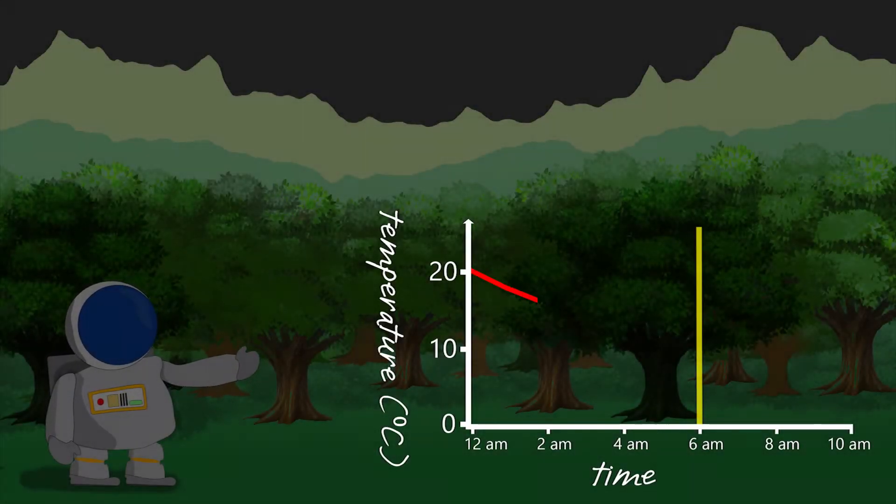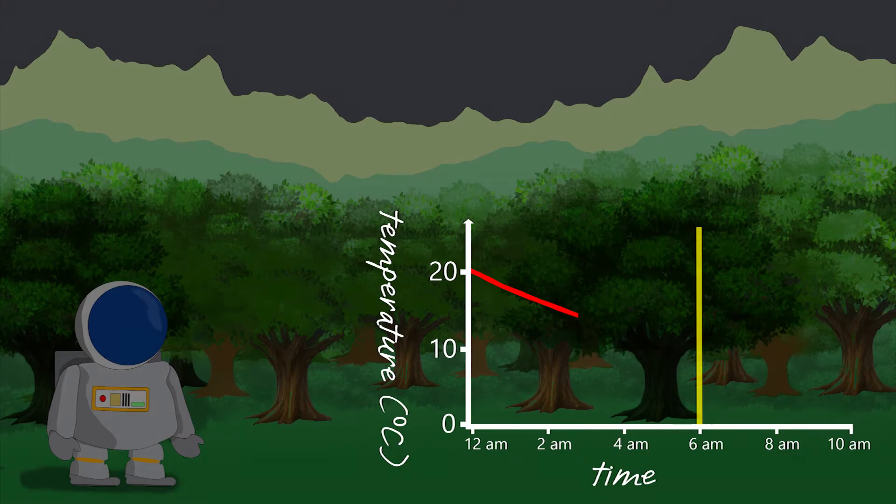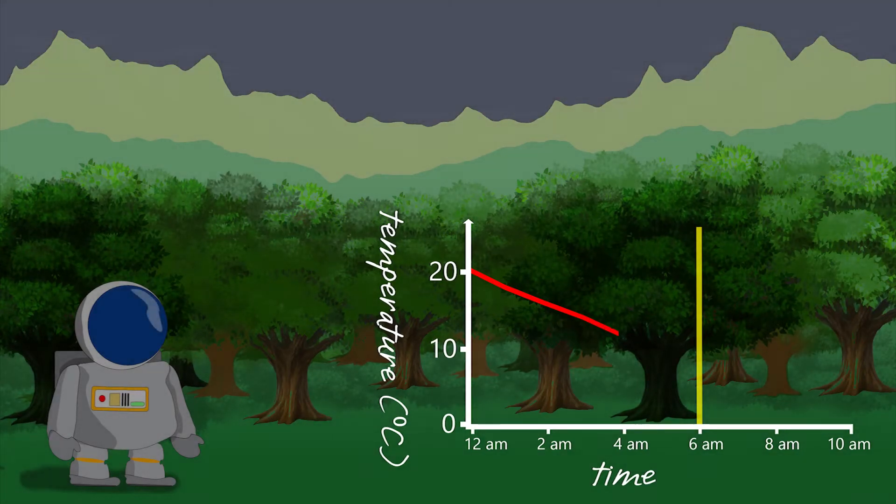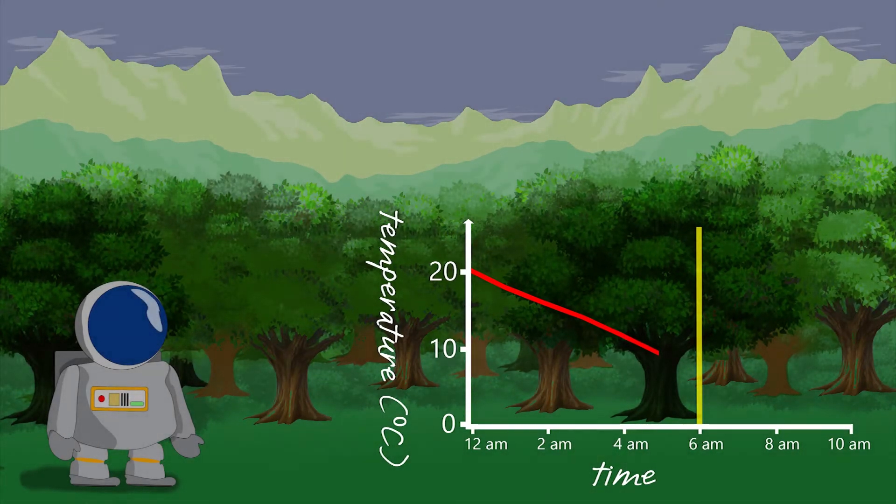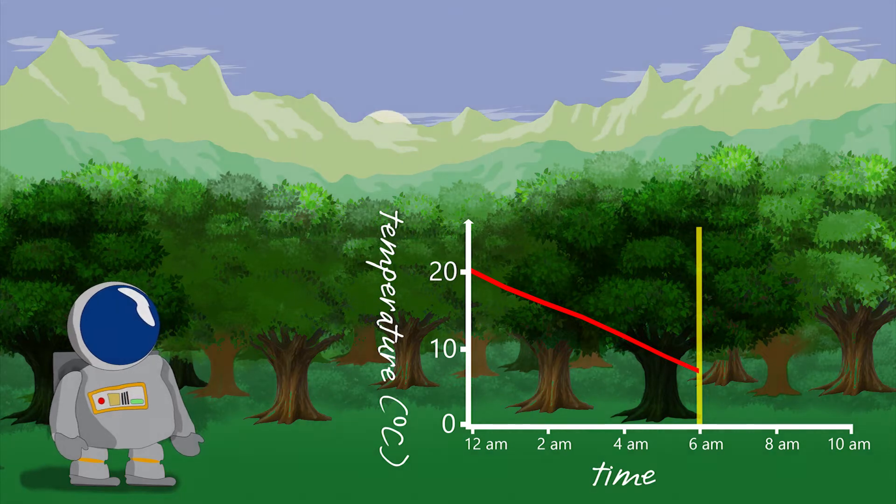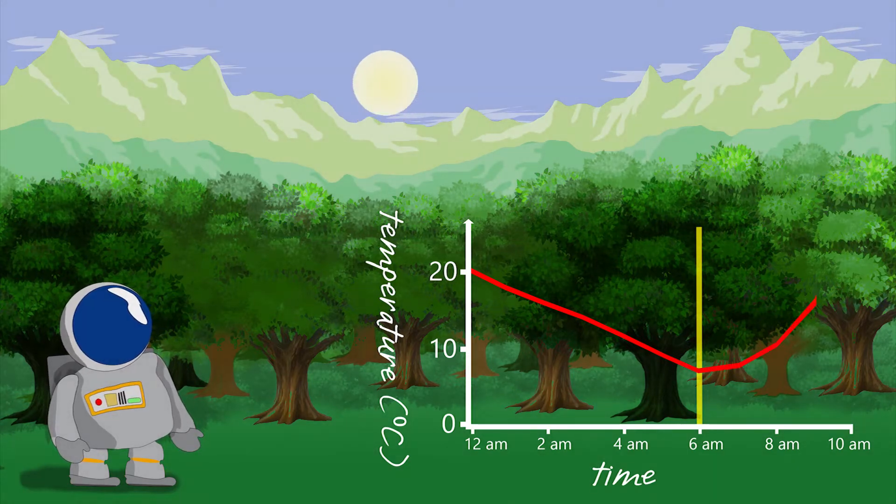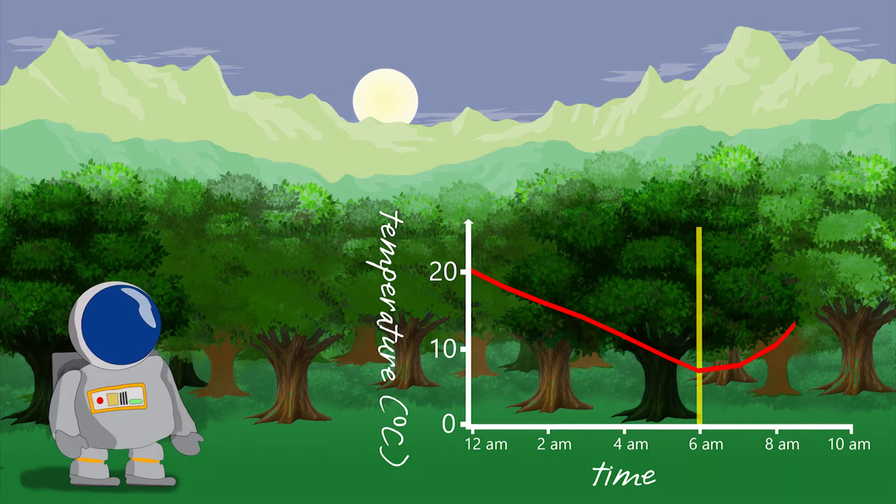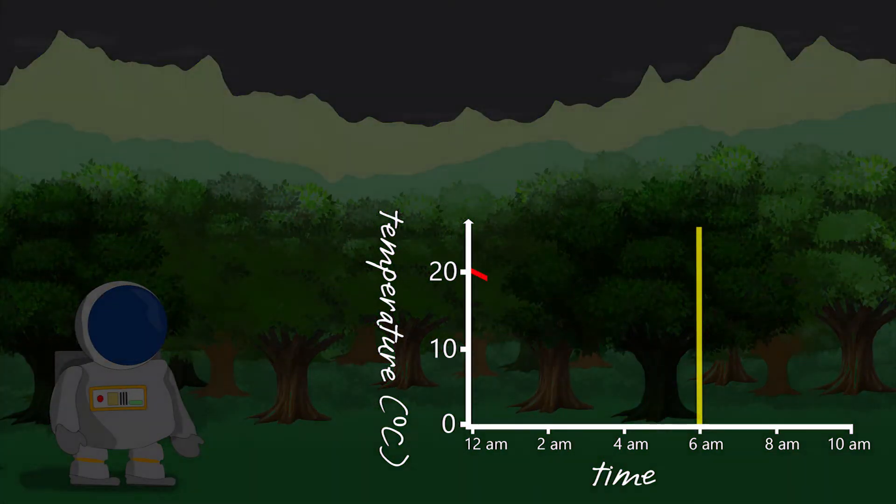Alright, so check out the graph to see the temperature changing. The yellow line is sunrise. I was expecting to get there before sunrise, and then as the sun rose, the temperature would steadily increase, but that didn't happen at all.